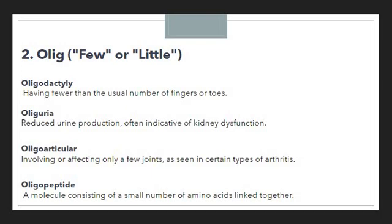Oliguria means reduced urine production, often indicative of kidney dysfunction. If someone is suffering from kidney dysfunction, they may suffer from reduced urine production, denoted by the medical terminology oliguria. The prefix olig again conveys the sense of few, less, or little amount. Then we have 'oligoarticular,' meaning involving or affecting only a few joints.